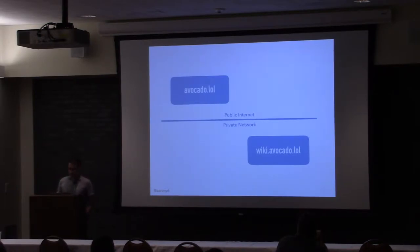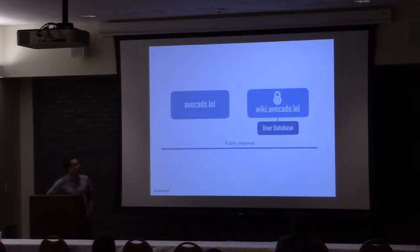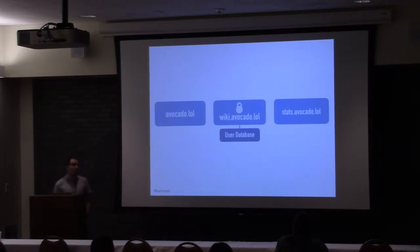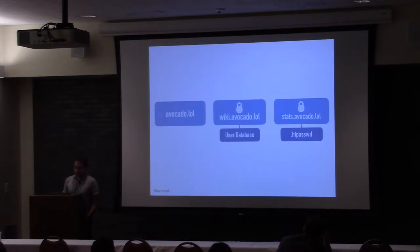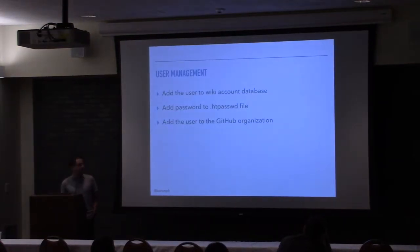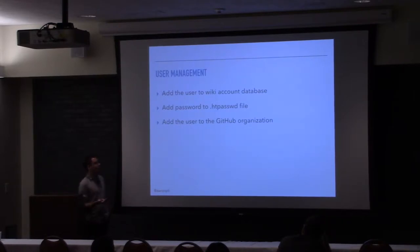Then they realize that a bunch of people are working from home and don't have access to the private network. So they move it back out to the internet and add a login form and a user database. As they grow, they start adding more internal subdomains like a stats server showing Munin for server monitoring. Munin just publishes all its files as static HTML, so there's no database you can put in front of it — they just use an htpasswd file. Then they set up a continuous integration server, which happens to have GitHub auth built in. So now the company has three places to manage users.